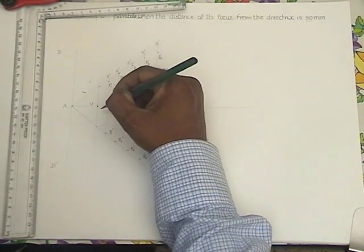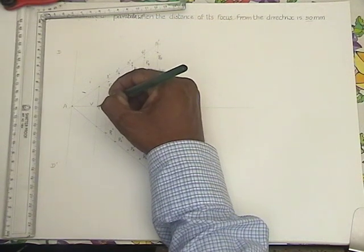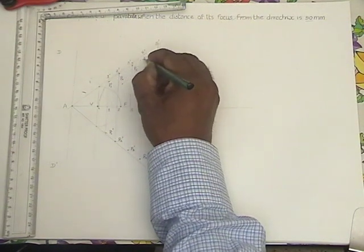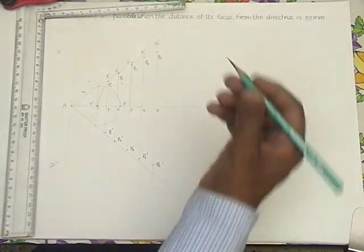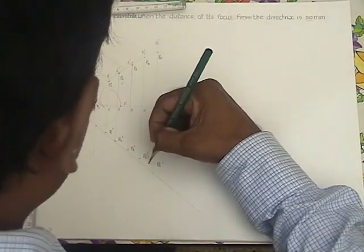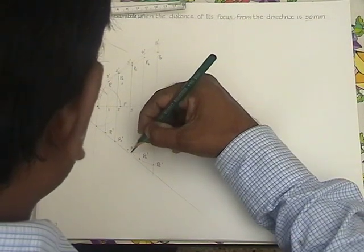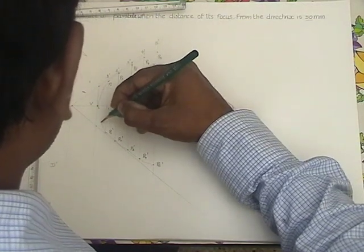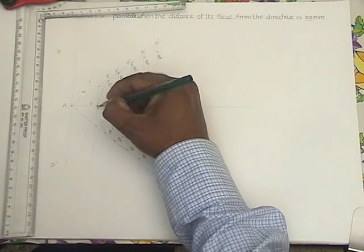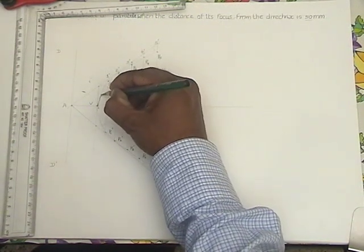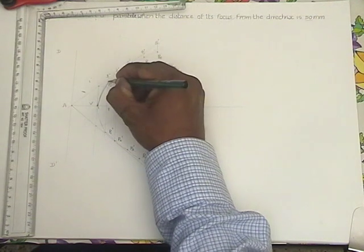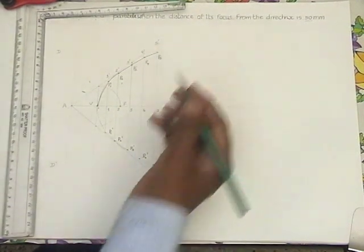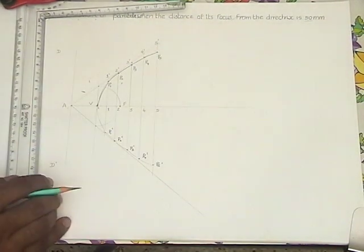Now join this curve with the help of smooth arc. Join all the points to get a smooth curve, both at the top and the bottom. Without lifting the pencil, finish the parabola. Likewise you can do it at the other side also.